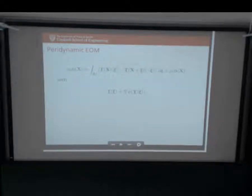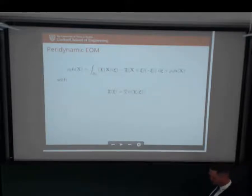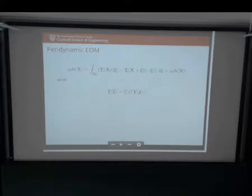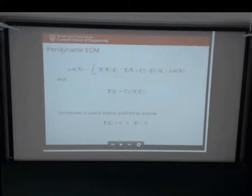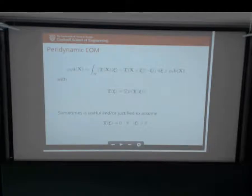I derived it from Hamilton's principle without any notion of a non-local flux, and without any approximation in the kinematics. If you don't approximate the kinematics in any way, this is the only equation you can get from Hamilton's principle. You never saw me talk about a horizon - I said the potential energy at a point X is a function of the deformation everywhere in the body. It's only now that I'll introduce a horizon and say that sometimes it's useful to assume that beyond some distance this is zero. In other words, the horizon could be infinite - it could be the entire body.